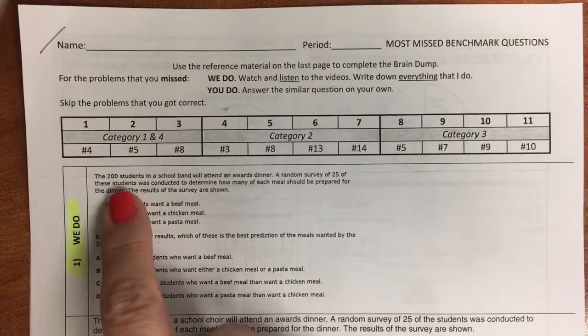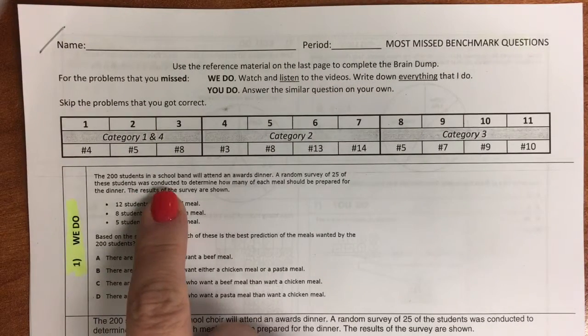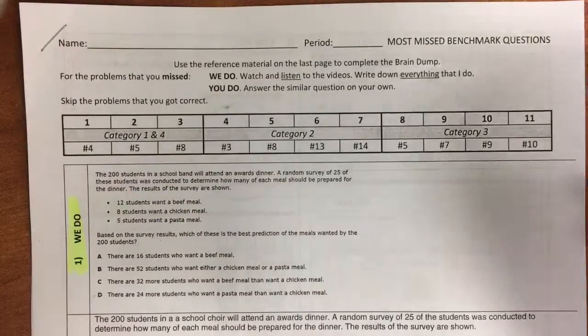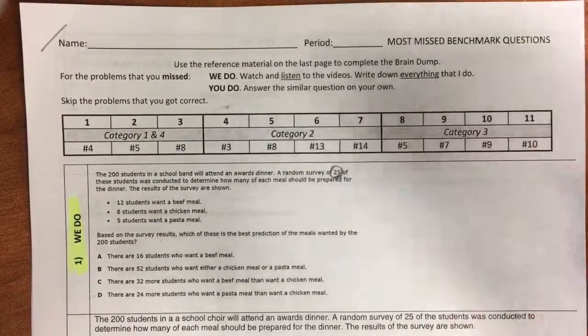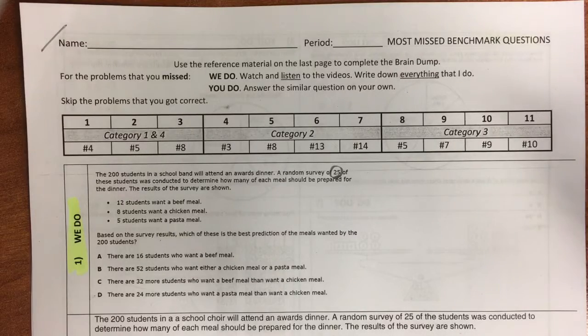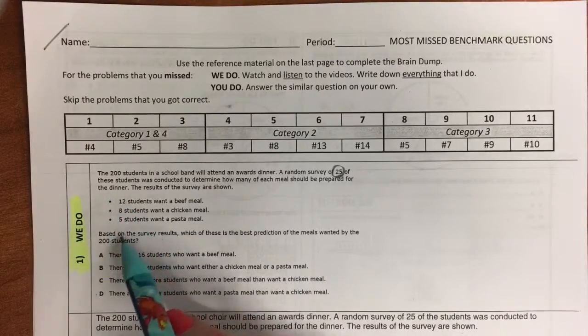The first problem. The 200 students in a school band will attend an awards dinner. A random survey of 25 of these students was conducted to determine how many of each meal should be prepared for the dinner.